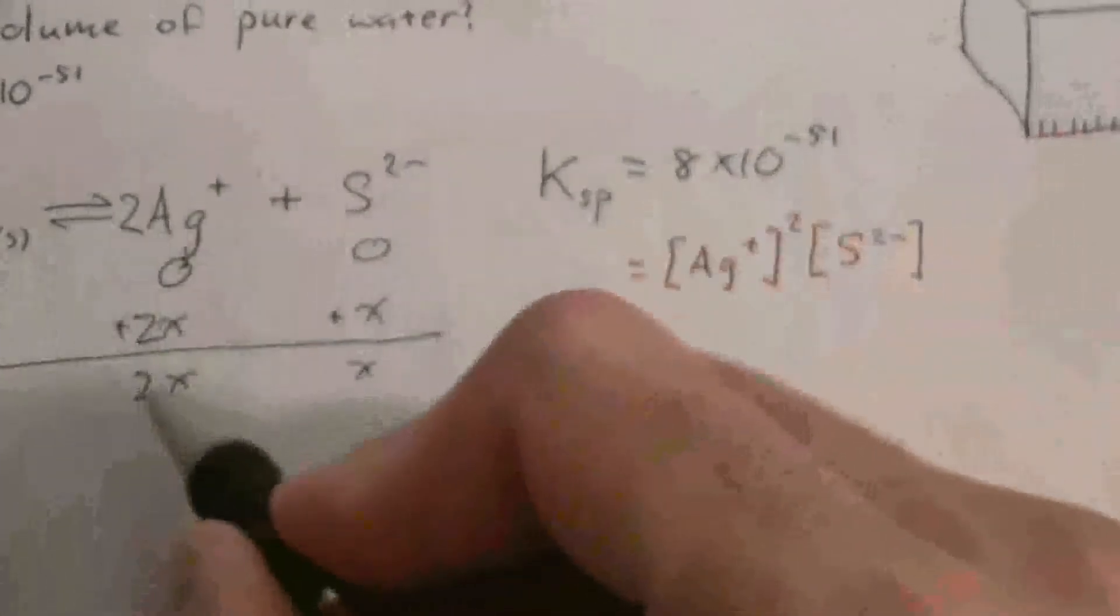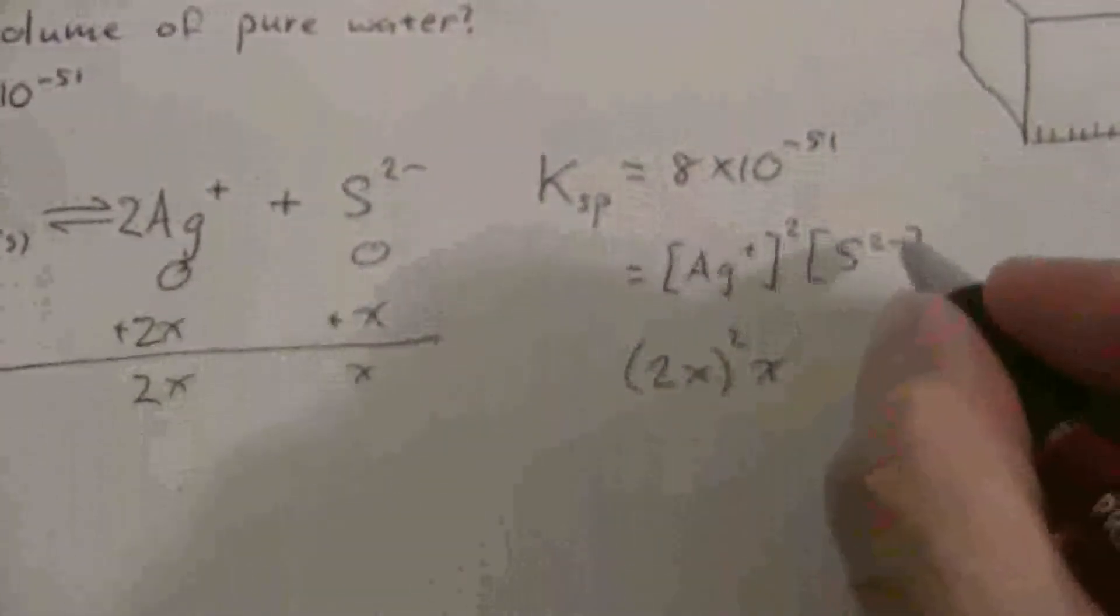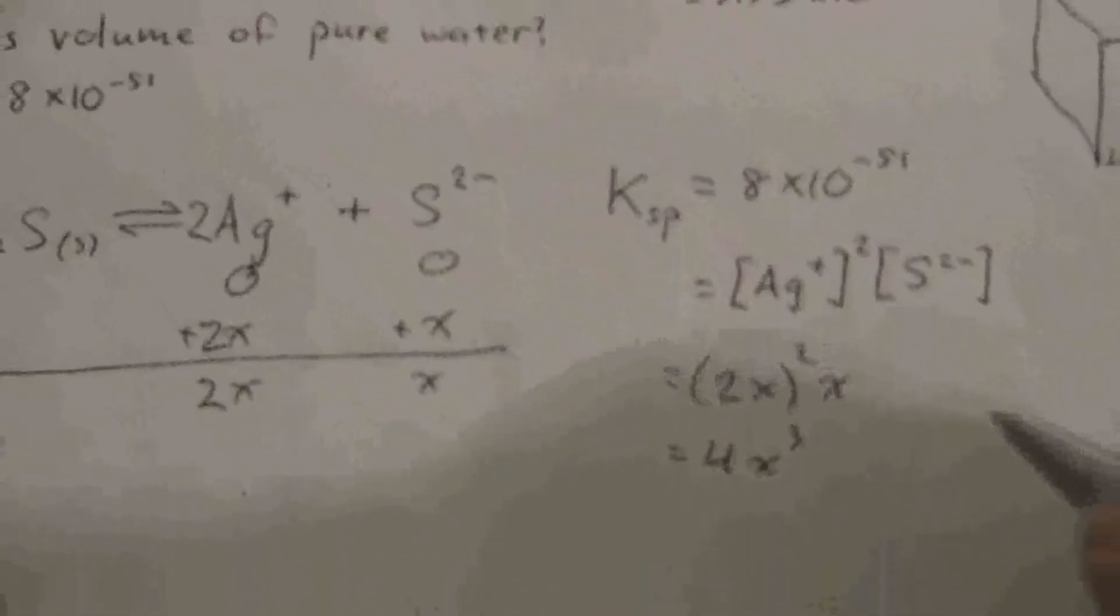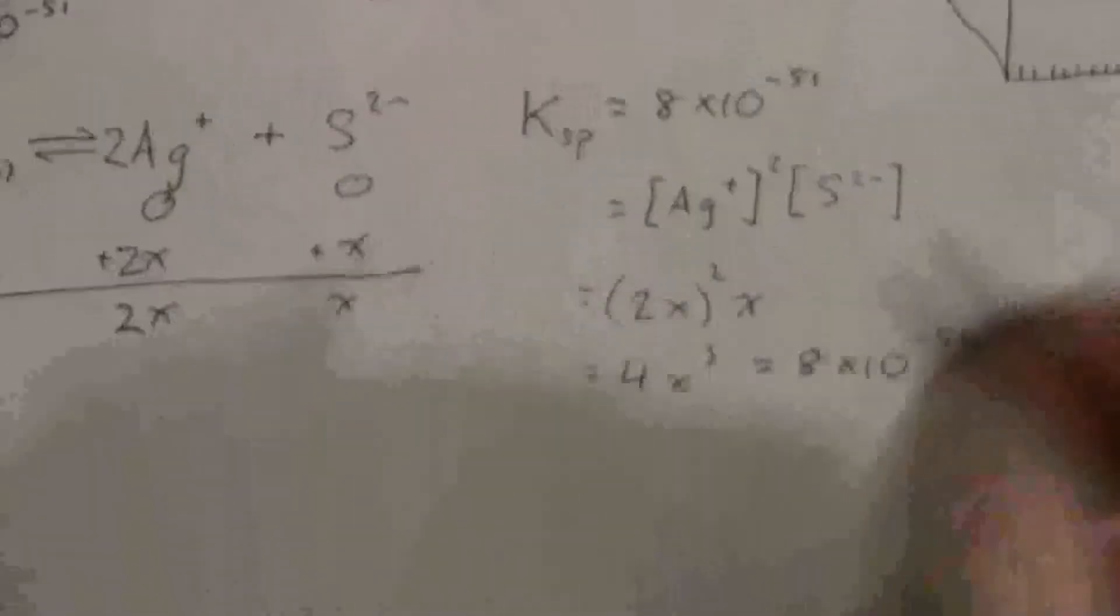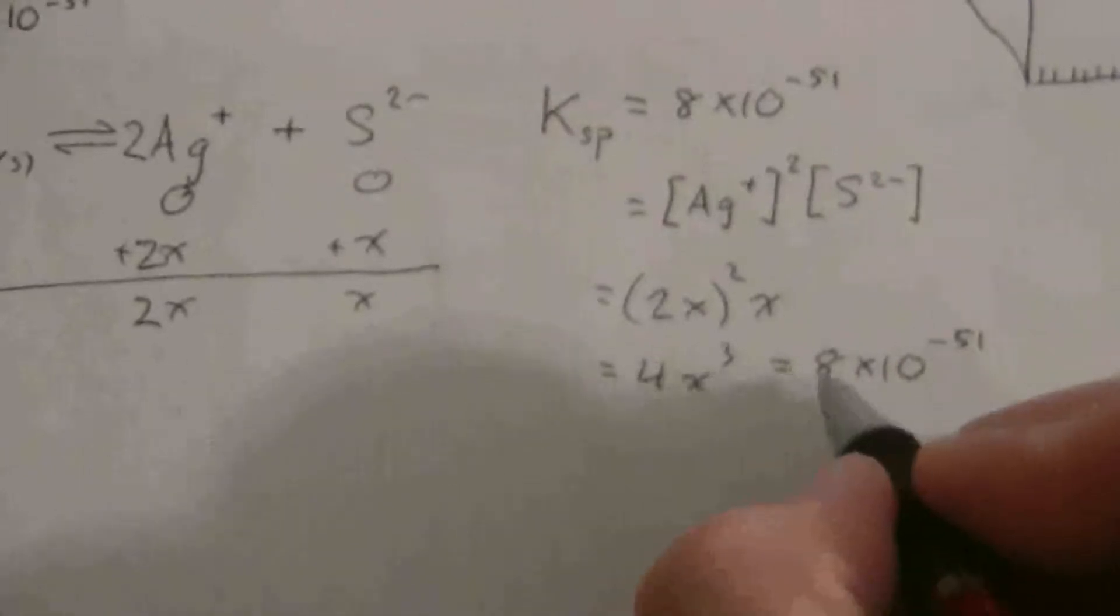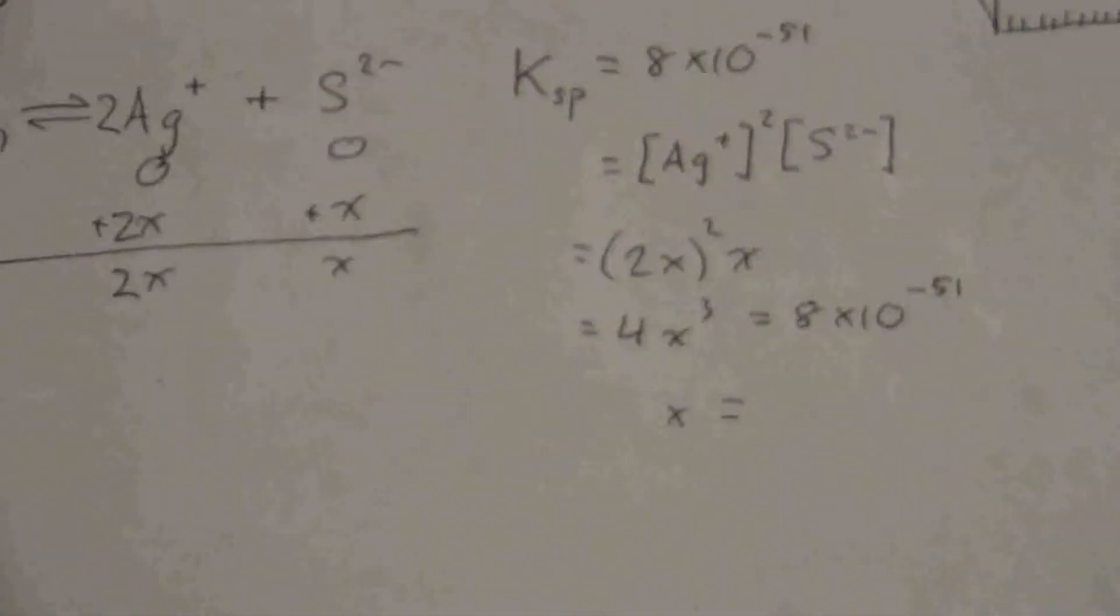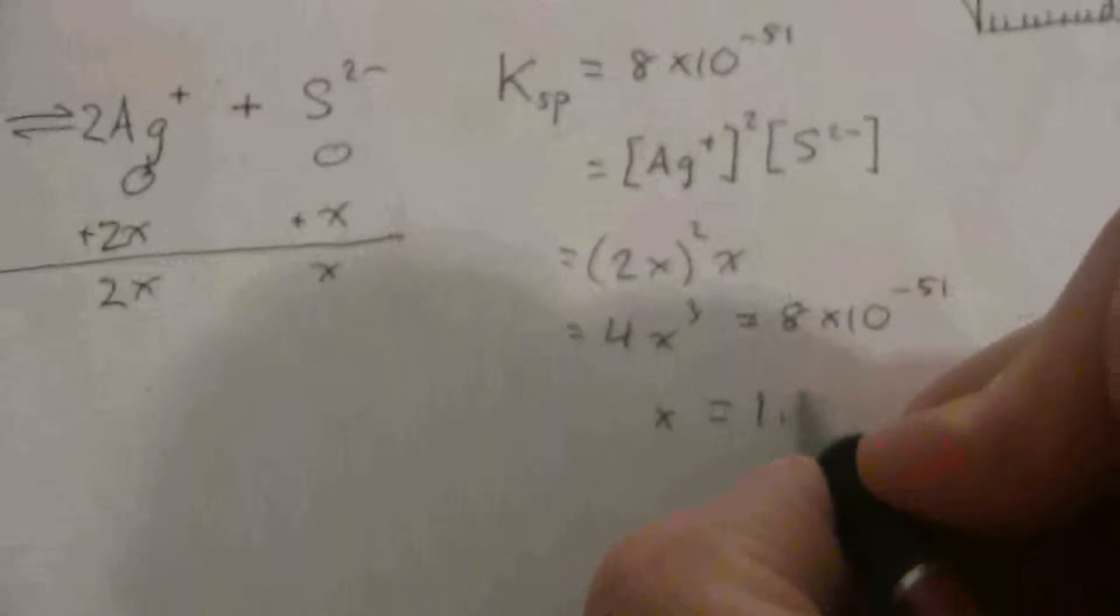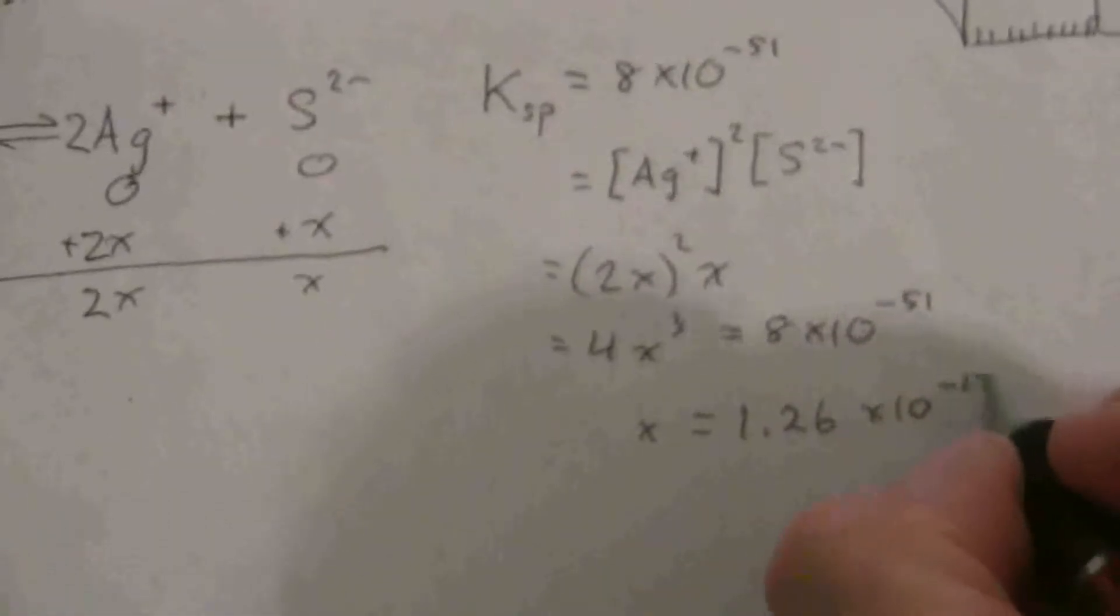Now let's put that in here. We have 2x for the silver and we're squaring that, and then x for the sulfide. This will be 2 times 2 is 4x cubed. This equals 8 times 10 to the negative 51. If we divide that by 4 that'll be 2 times 10 to the negative 51. Take the cube root of that value and what you end up with is 1.26 times 10 to the negative 17th.